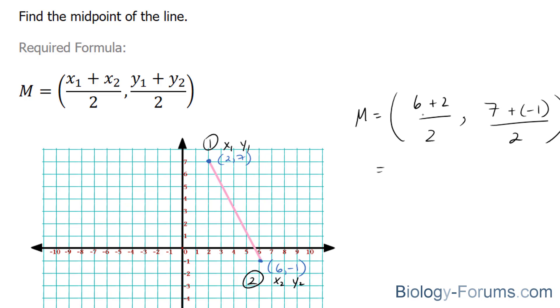6 plus 2 is 8, divided by 2 is 4, and 7 plus negative 1 is 6, divided by 2 is 3.